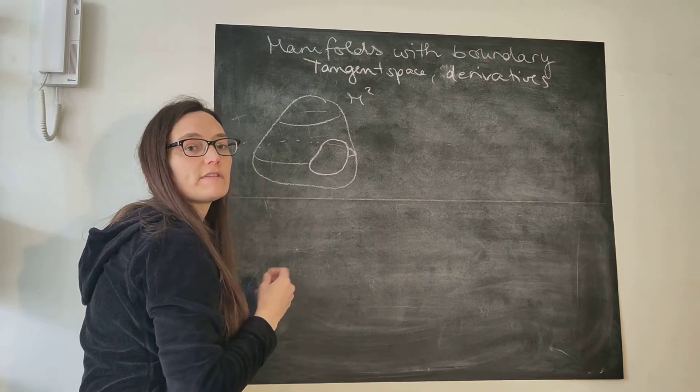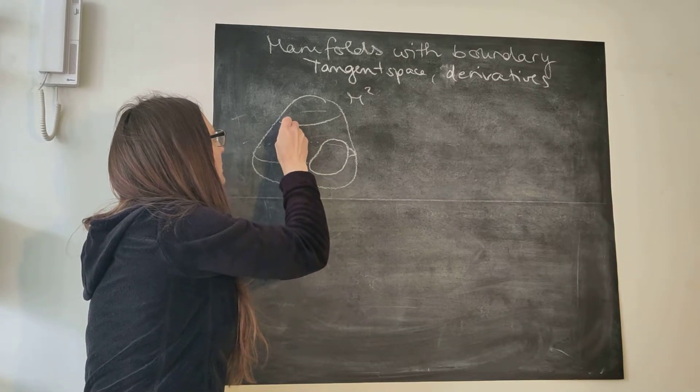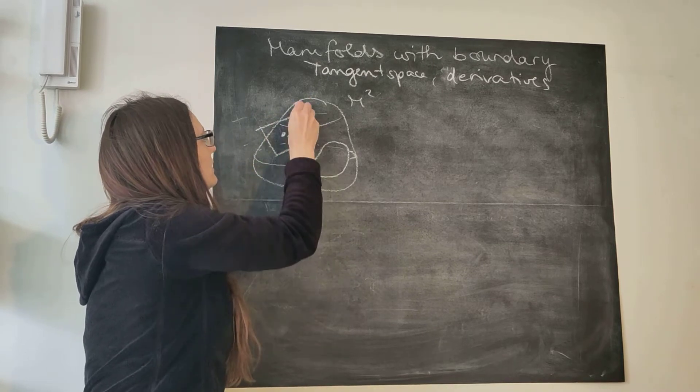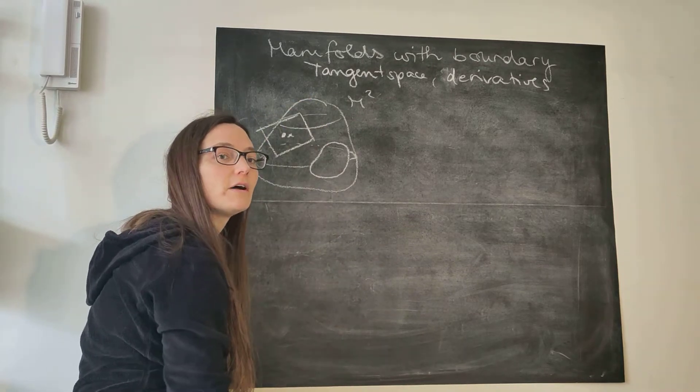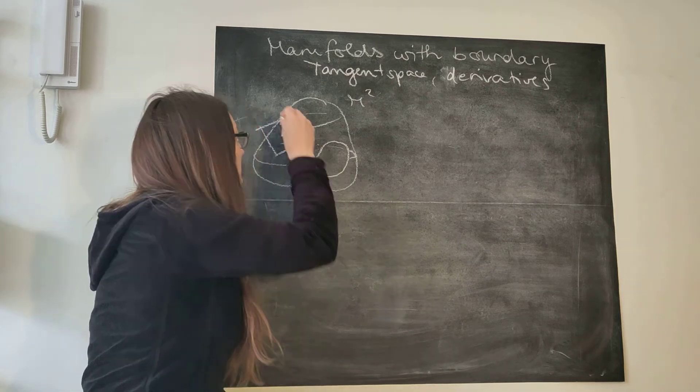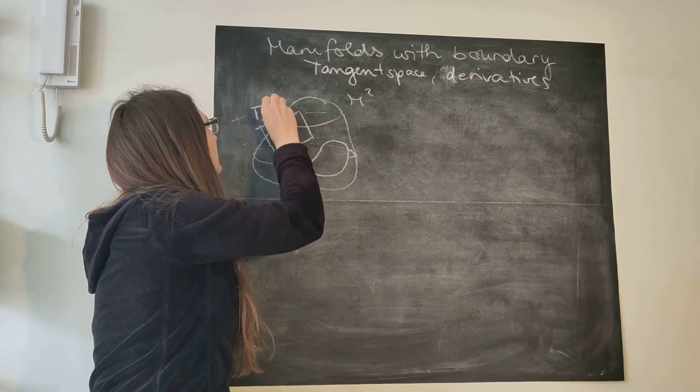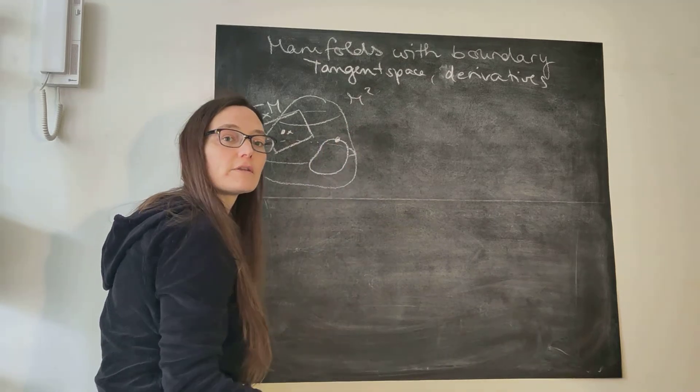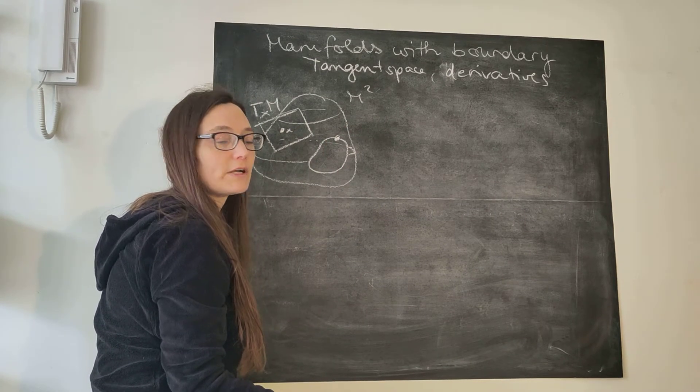For points that are not on the boundary, everything works just as always. Here would be a two-dimensional tangent space, a tangent plane at this point. So what about points that are on the boundary? That's the only thing where things might be different.